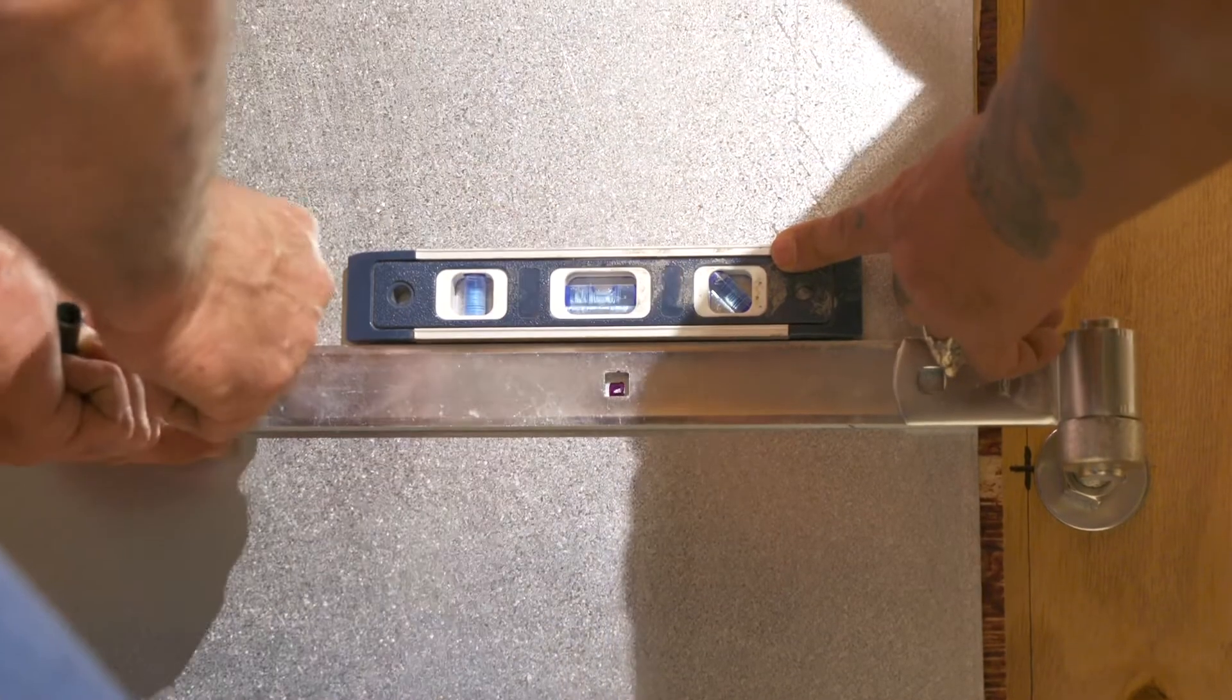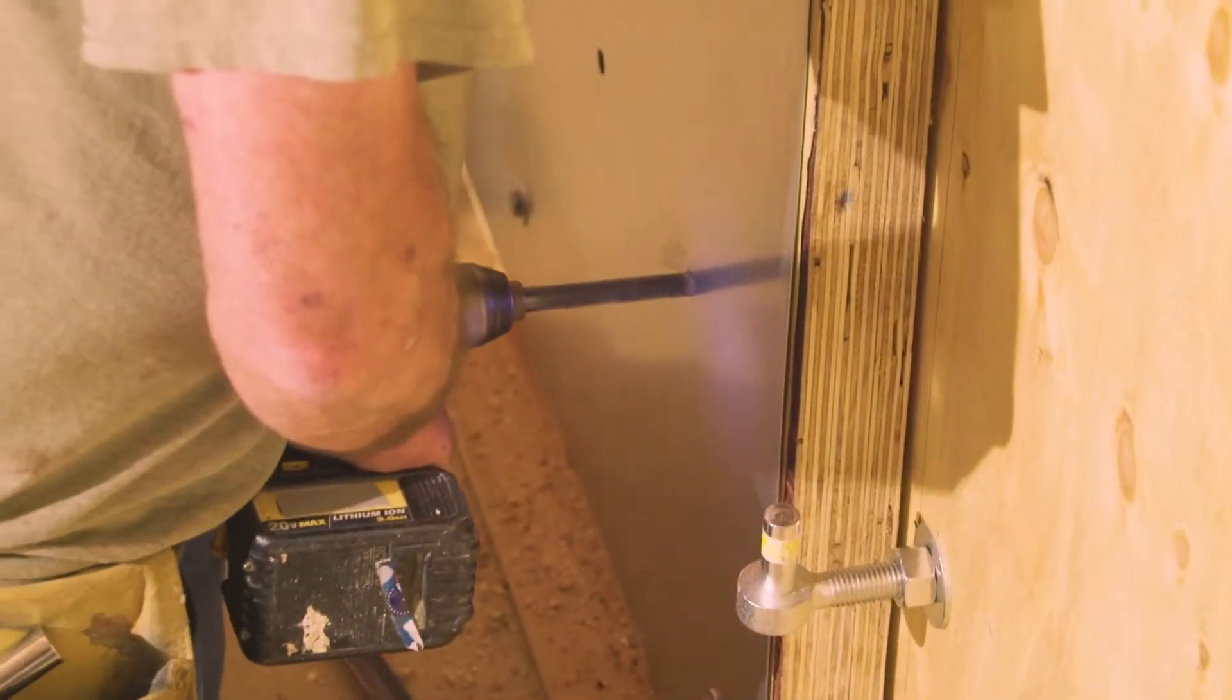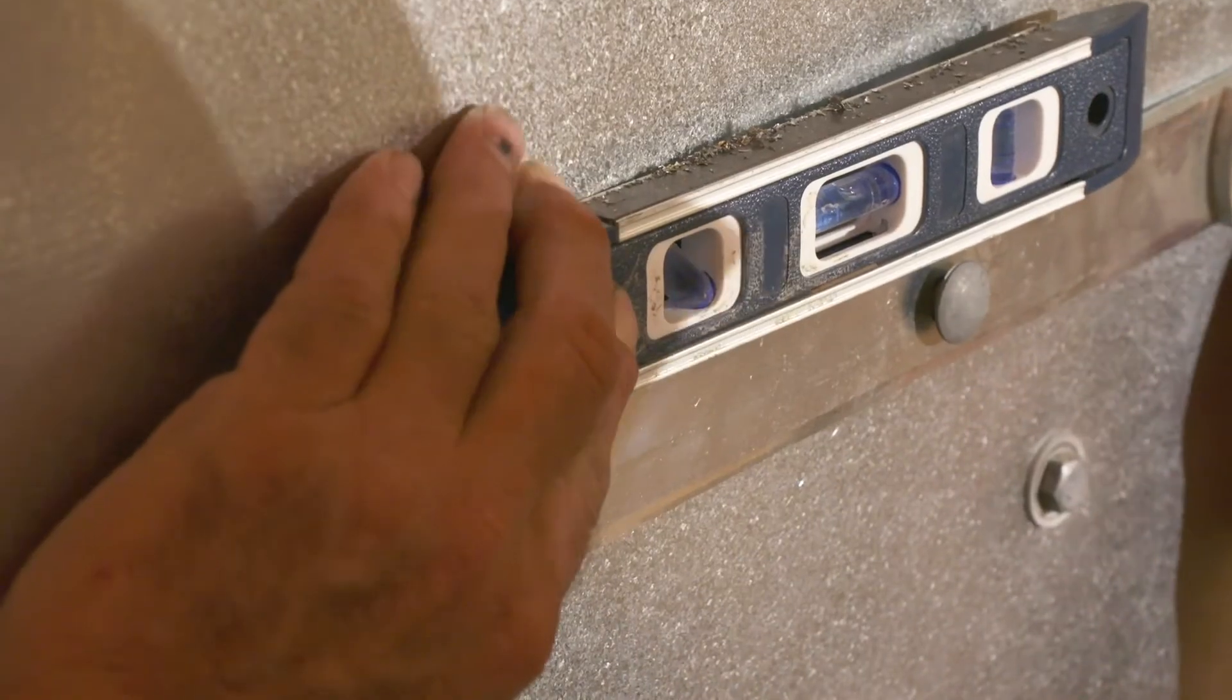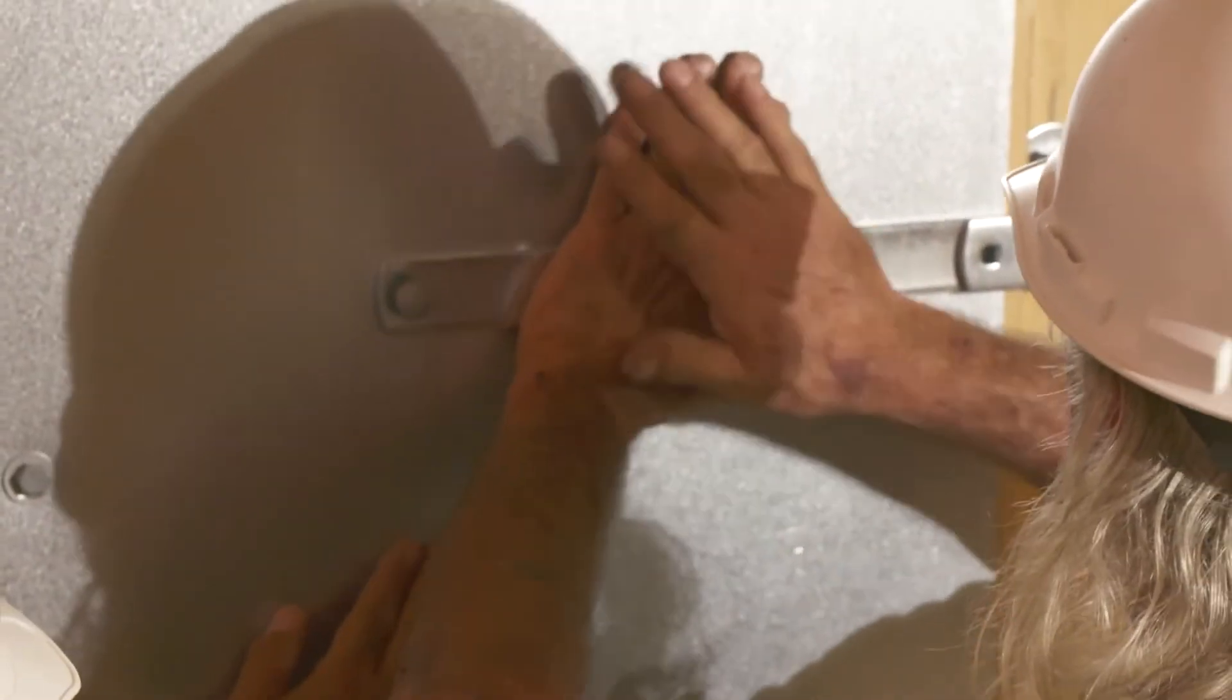Next, drill six half-inch holes in the door, two for each of the three hinges. The hinges will be attached to the exterior of the door with three-eighths inch bolts.